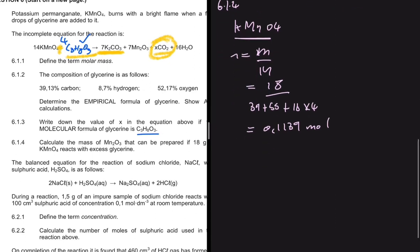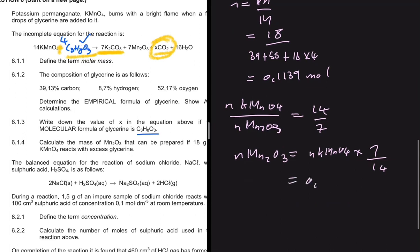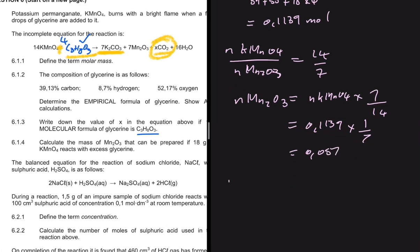Using the balancing coefficients: moles of KMnO₄ divided by moles of Mn₂O₃ equals the ratio of their coefficients, which is 14 to 7. Cross-multiplying gives moles of Mn₂O₃ = moles of KMnO₄ × 7/14, which simplifies to dividing by 2. So 0.1139 ÷ 2 = 0.057 moles of Mn₂O₃.